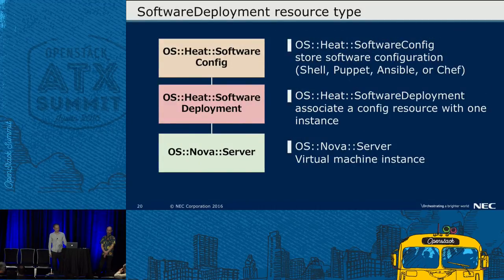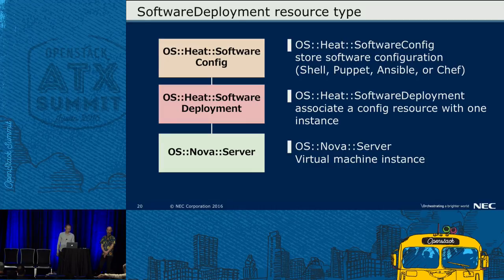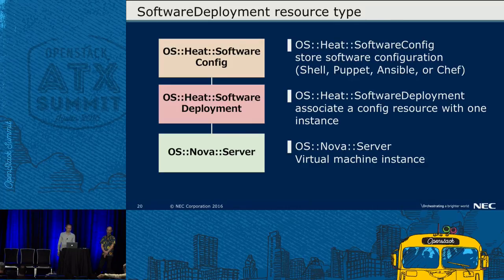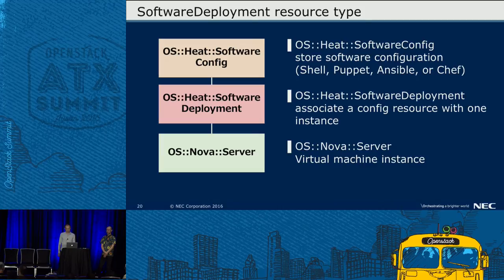The software deployment resource type applies software configuration to one instance. Software config stores software configuration — shell script, Puppet, Ansible, and Chef. Nova server resource type means a virtual machine instance. Software deployment resource type associates a config resource with one instance. Software configuration can be written in the template directly, or can include a file by get_file function, but it is not enough for some cases.